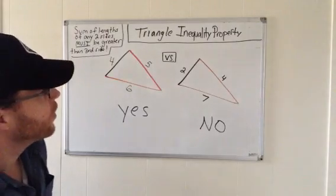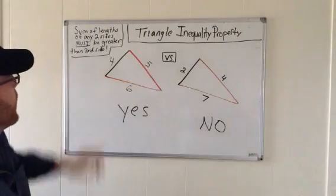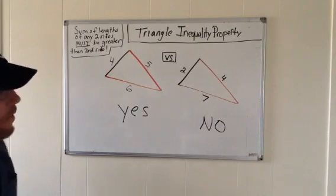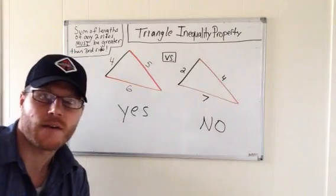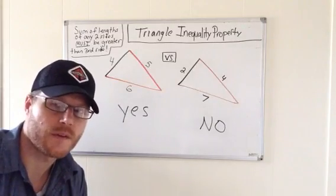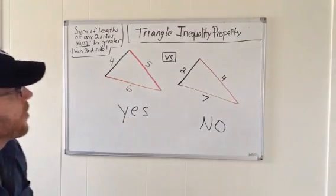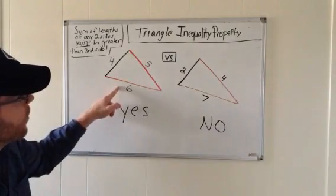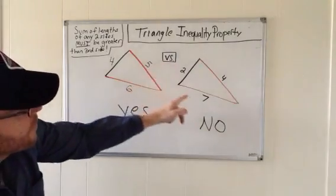The triangle inequality property basically says that the sum of the lengths of any two sides must be greater than the third side. Now we know a triangle has three sides. That's where tri comes from within the word triangle. It has three sides and what I've done is I've drawn a triangle here versus a triangle here.